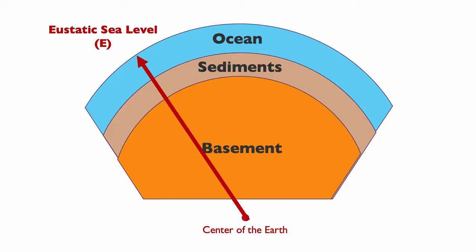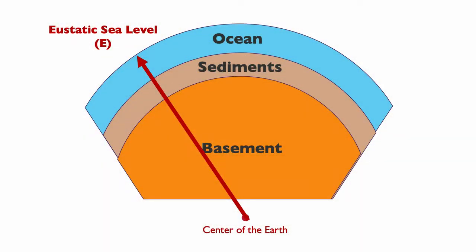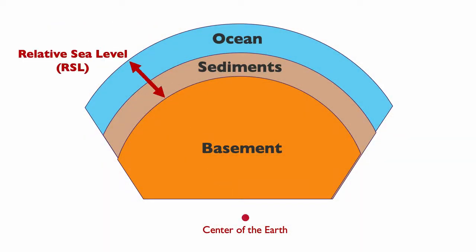We can also speak about eustacy, or eustatic sea level, or absolute sea level — these things are equivalent. Eustacy is defined as the distance between the center of the earth and the top of the water column. Relative sea level is the distance between the top of the basement and the top of the water column. These are not the same: eustatic sea level and relative sea level are measured relative to a different datum, and that's a very important concept.